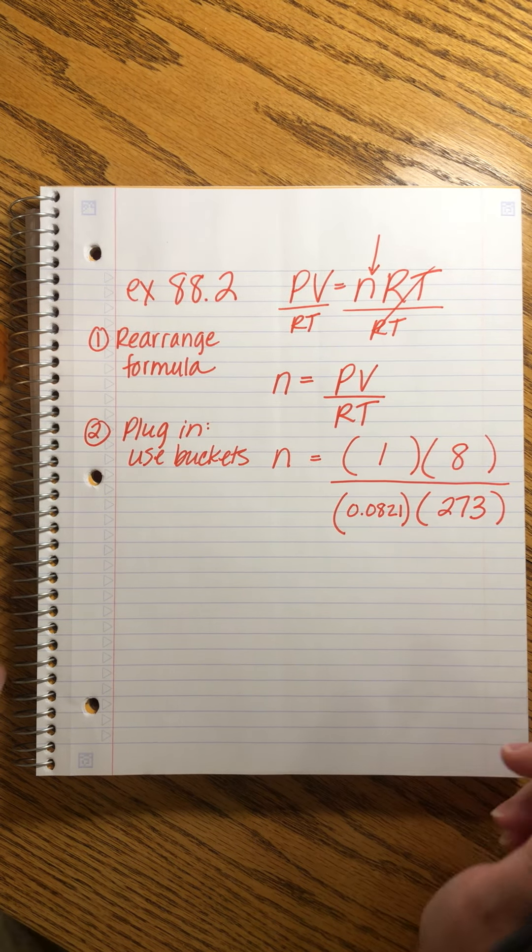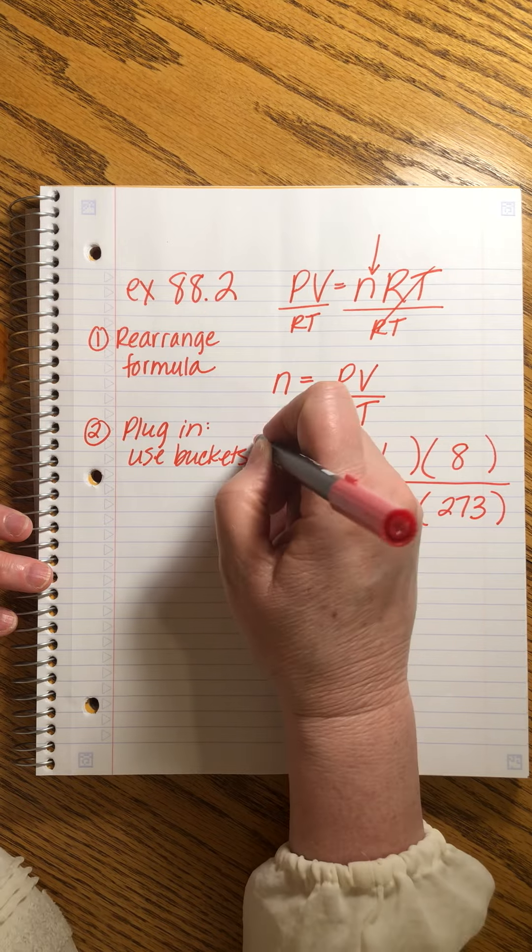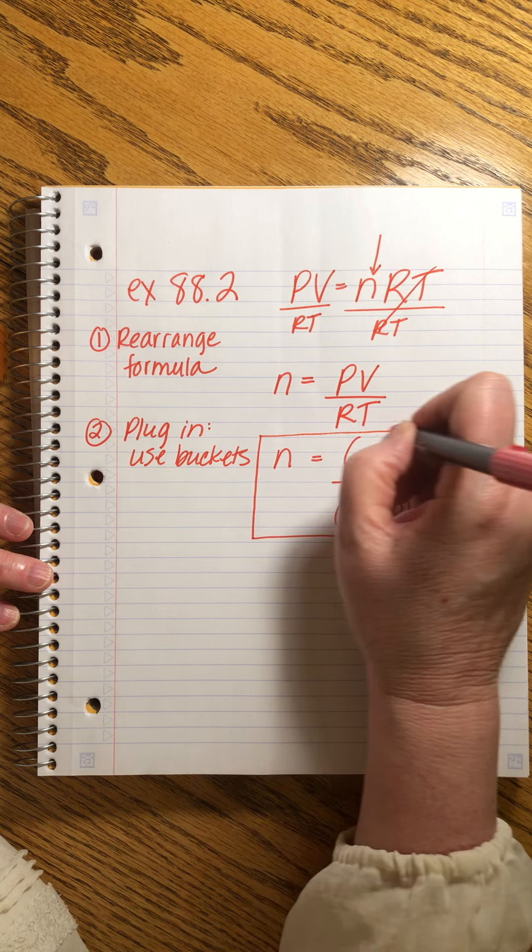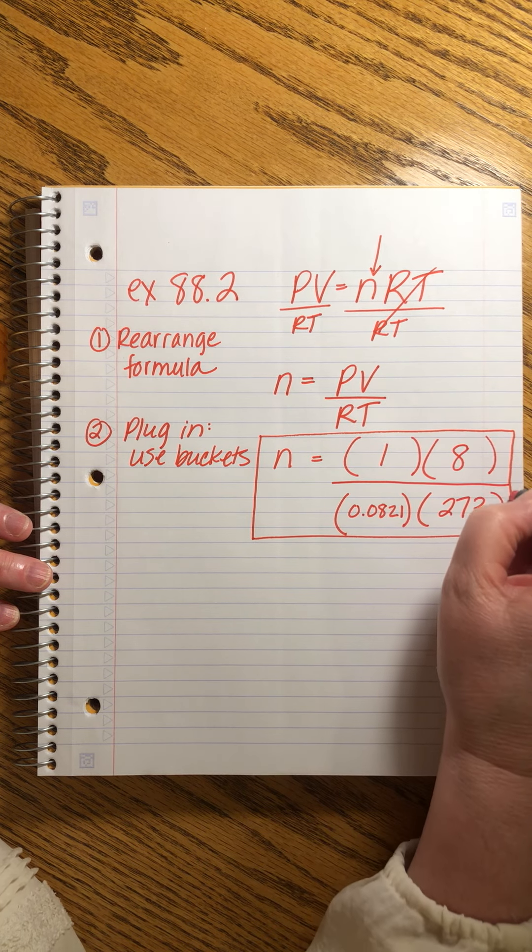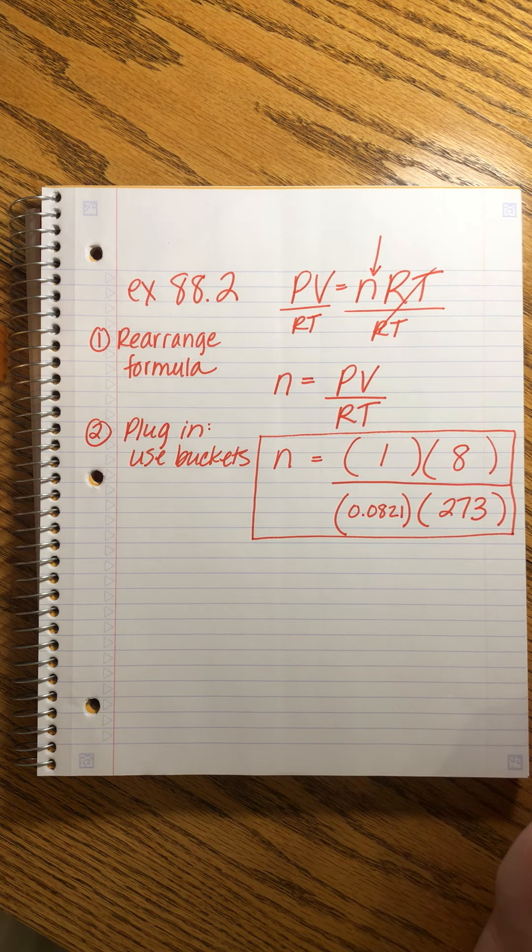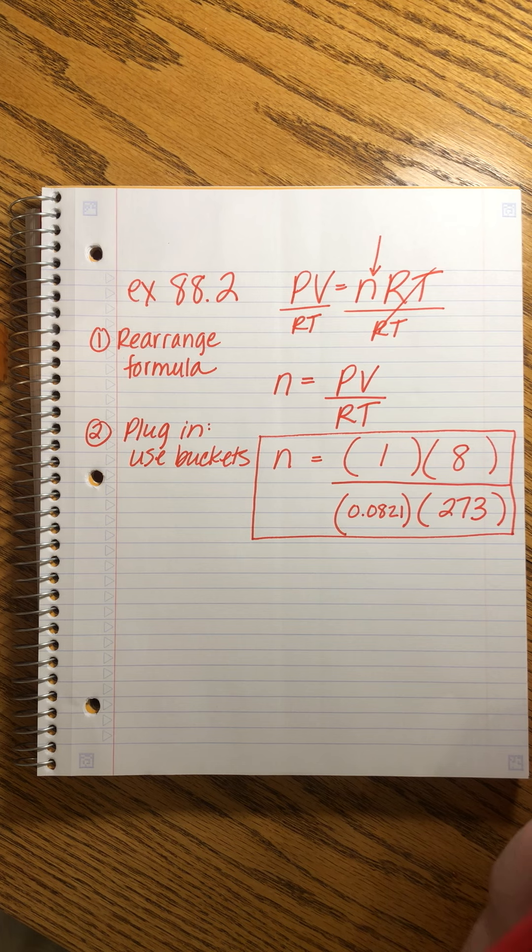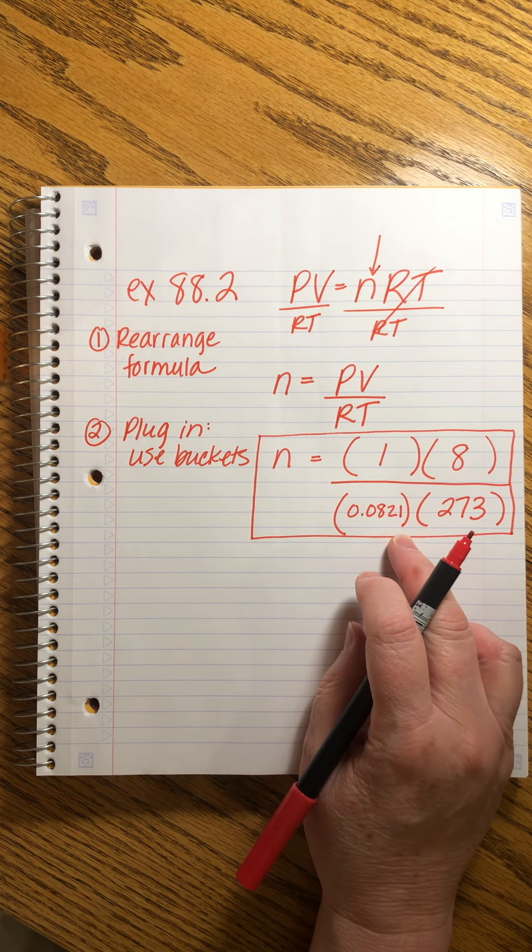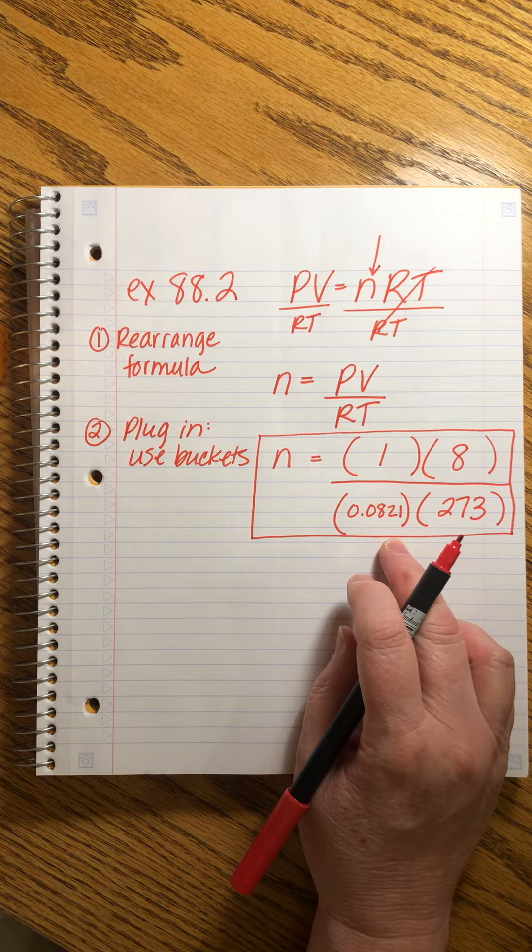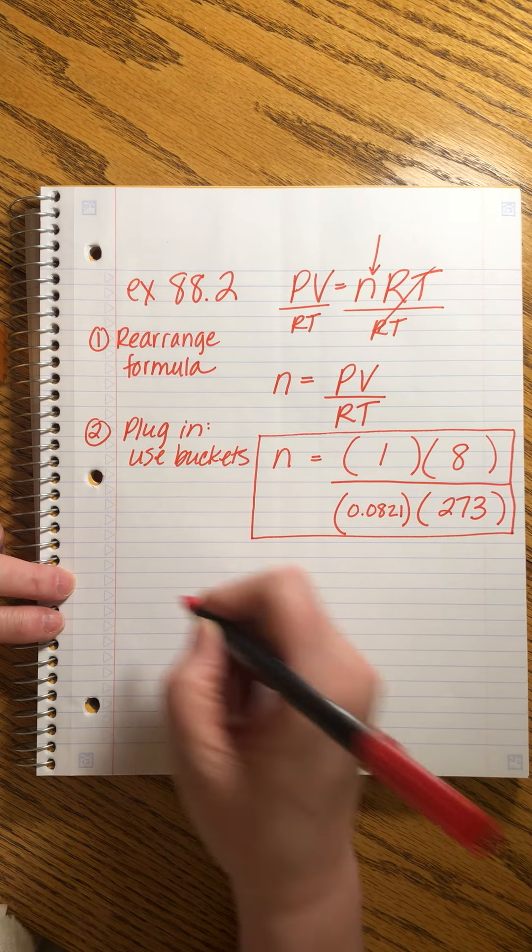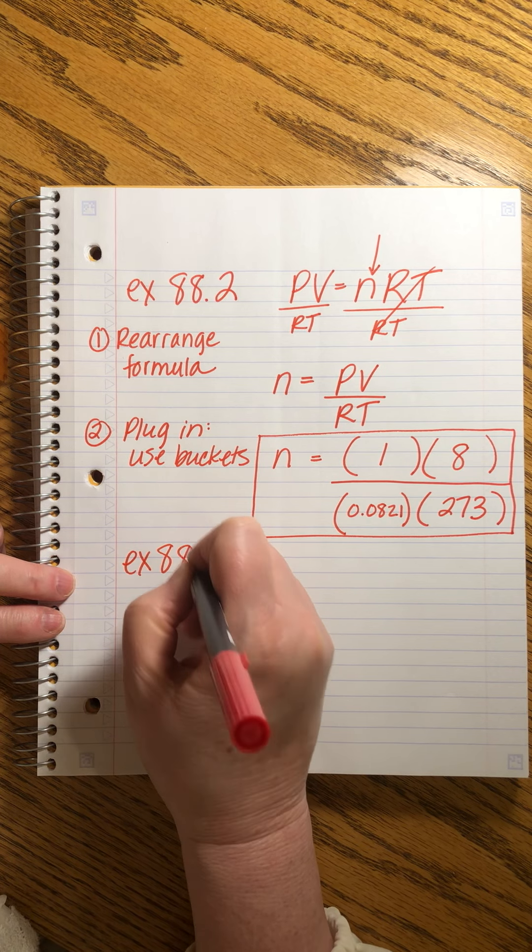All right. And here's the good news. John does not require us to pick up our calculators and grind through the numbers. Although we could easily, couldn't we? Calculators are not the devil's tool. Always. Sometimes they are, but not always. Okay. So if John did want you to reduce this to a single digit, you could use a calculator. I would not expect you to do that by hand. And then let's do the last one. 88.3.